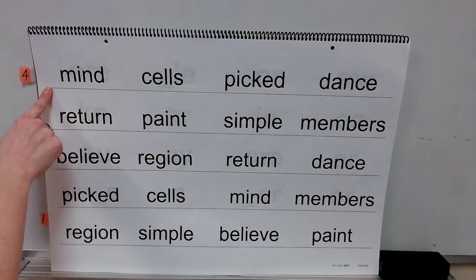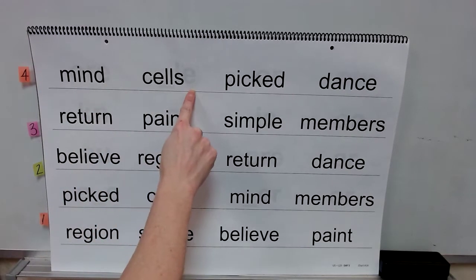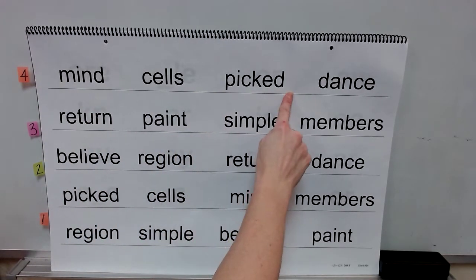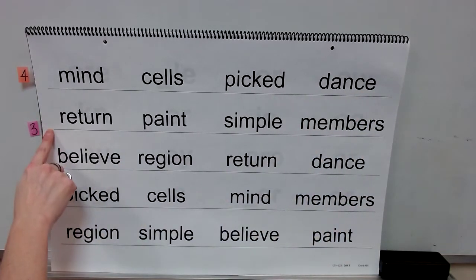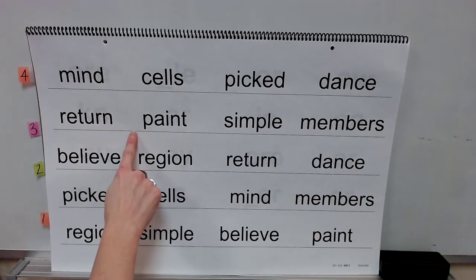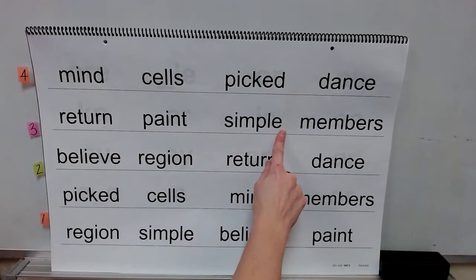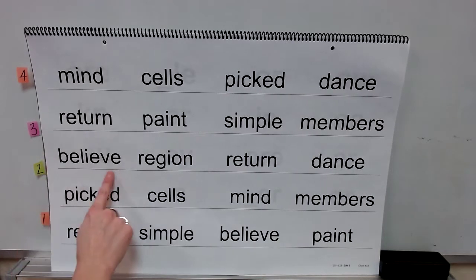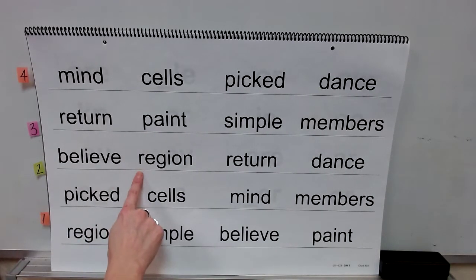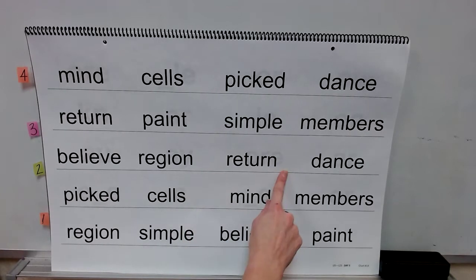You're going to start by reading some high-frequency words. Get ready. Word: mind. Word: cells. Word: picked. Word: dance. Word: return. Word: paint. Word: simple. Word: members. Word: believe. Word: region. Word: return.